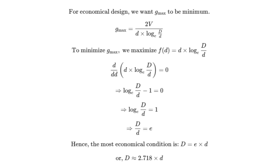There it is — the most economical condition for cable design. Your sheath diameter D should be 2.718 times the conductor diameter d. That means for every one unit of conductor diameter, the sheath diameter should be about 2.718 times larger. Nature's favorite constant e even sneaks into cable design.